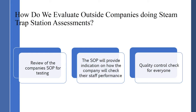When I evaluate people coming on site for non-destructive testing, I'm looking at their qualifications, but also their SOP or procedure documents. If a company's SOP for a steam trap assessment is two paragraphs, that tells me one thing. If it's 56 pages long, that tells me something else. The SOP we follow with our staff is 56 pages in length — we go through everything to make sure our staff members are doing the testing correctly and repeatedly. The SOP also provides indication of how the company will check staff performance.